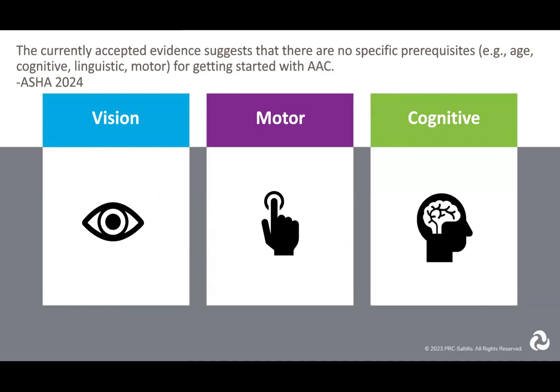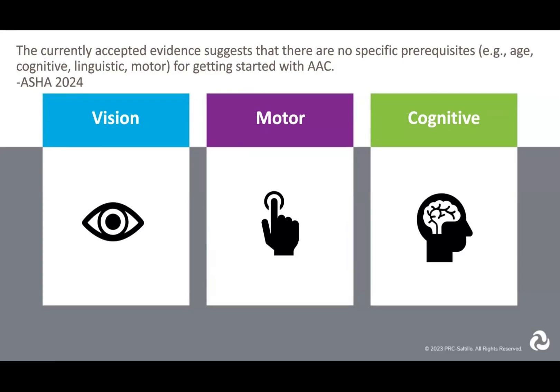Everyone here probably doesn't need this reminder, but I want to set us up by reminding us that research and best practice really advocates for the idea that there are no specific prerequisites someone must demonstrate before they are given access to AAC — and I like to clarify that should also include robust AAC vocabulary systems.